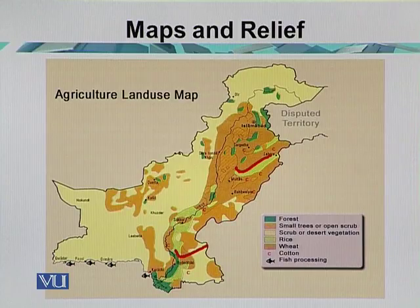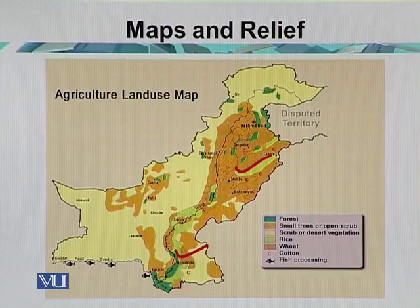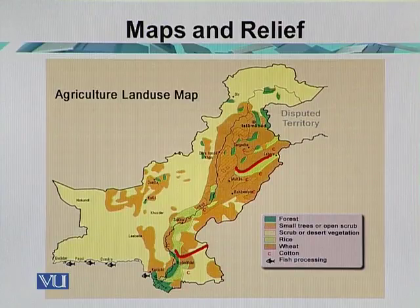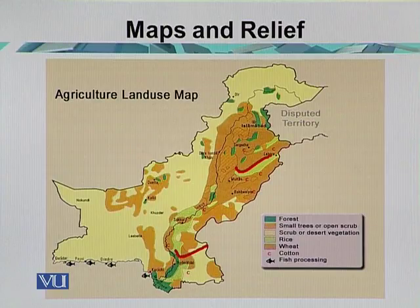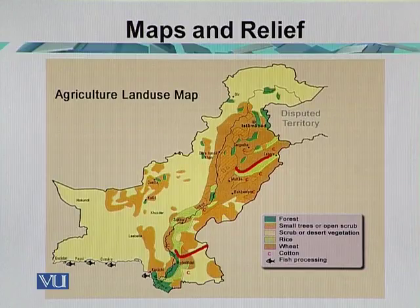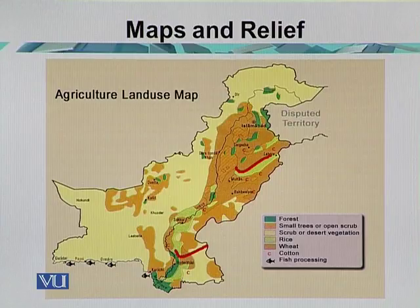Both Punjab and Sindh provinces are important for agricultural production. During summer, rice, sugarcane, and cotton are major crops, mostly coming from these two provinces. During winter, the major crop is wheat, most of which comes from Punjab or the upper Indus plain. The upper Indus plain is irrigated by five major rivers: the Indus, the Jhelum, the Chenab, the Ravi, and the Sutlej — all mostly belonging to Punjab province.